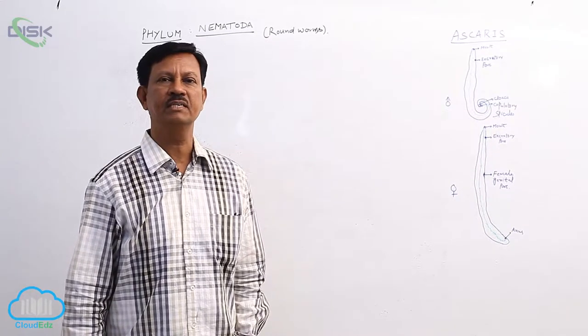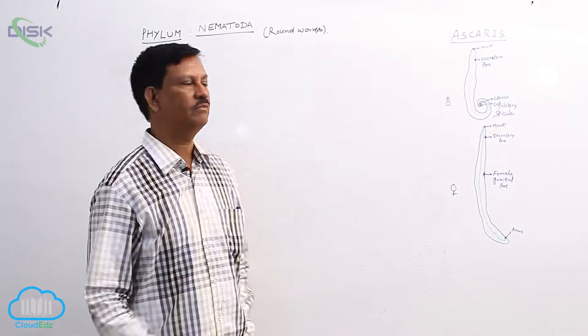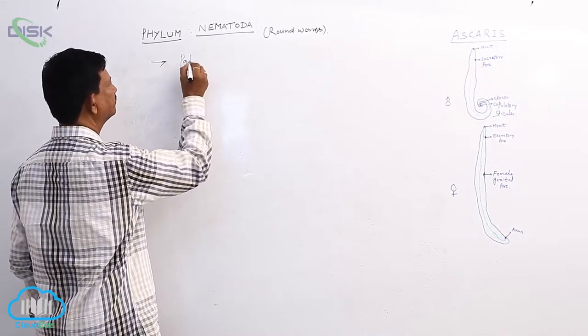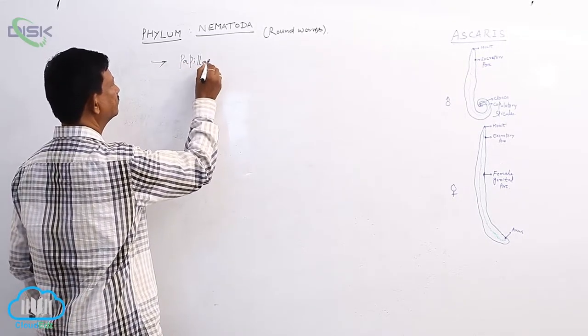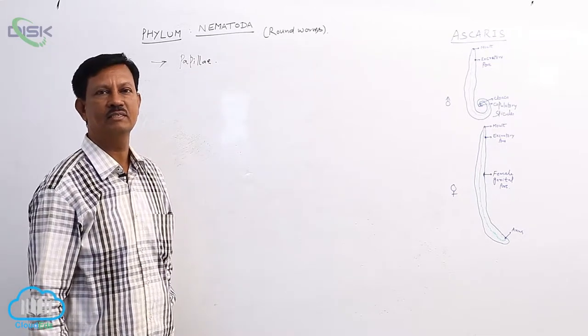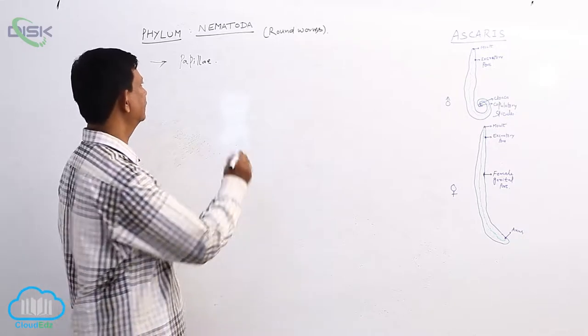Sense organs - there are different types of sense organs present in this phylum. They are papillae. Papillae are present at the anterior region, sometimes they are also present at the posterior region.